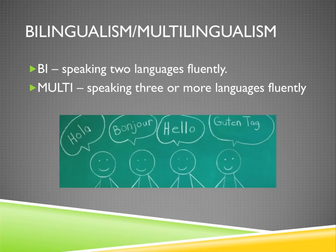The difference between bilingualism, which is what most people study, and multilingualism is just the number of languages that you know. Bilingualism is speaking two languages fluently, whereas multilingualism is speaking three or more languages fluently.